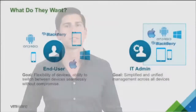So what do people want? End users and admins want slightly different things. As end users, we want to choose the device we prefer, switch between devices seamlessly throughout the day, and have no compromise to the experience on the device of our choice. IT, on the other hand, wants consistency in how it manages. As these devices flood into the workplace, IT needs to scale to manage them, and that scaling requires consistency and simplicity.